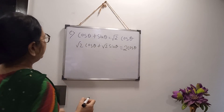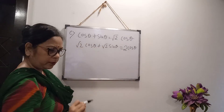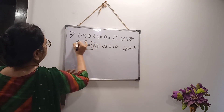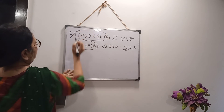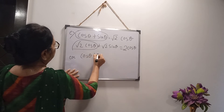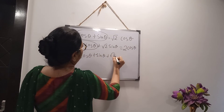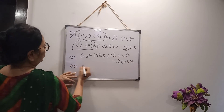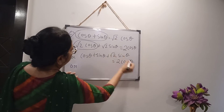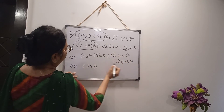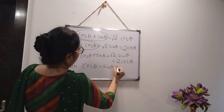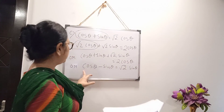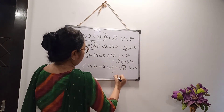So substituting: cosθ + sinθ + √2 sinθ = 2cosθ. Then 2cosθ - cosθ = cosθ, and moving sinθ to the right hand side gives: √2 sinθ = cosθ - sinθ. That is, cosθ - sinθ = √2 sinθ. It is proved.